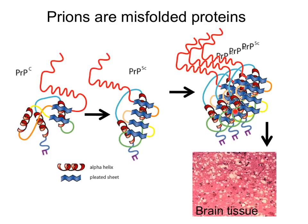And when they misfold, they aggregate and they stack up together, and they form these big clumps of proteins. And those are those nodules that we see here that are the ones causing the problems in the brain tissue. So in this case, just contact with a misfolded protein causes a normally folded protein to misfold, and then that would start to form this disaggregation.